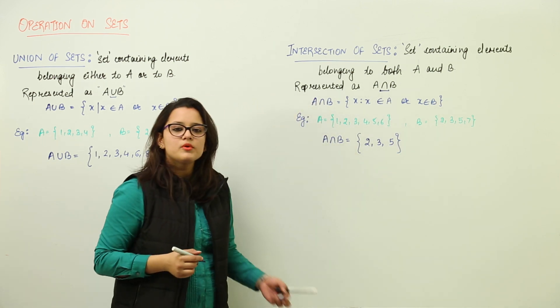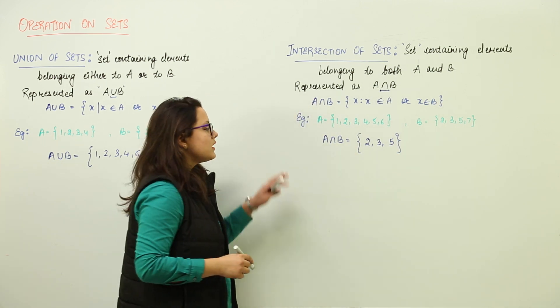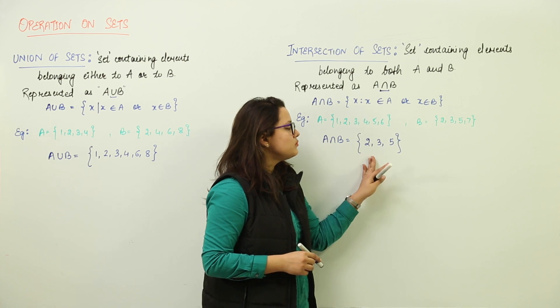These are the only elements common to both A and B. So A intersection B is 2, 3, and 5.